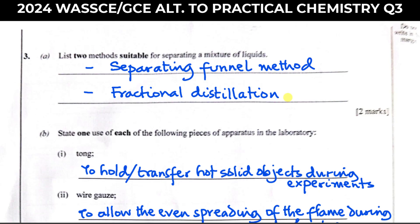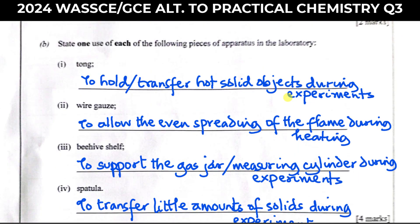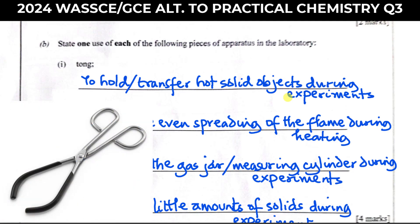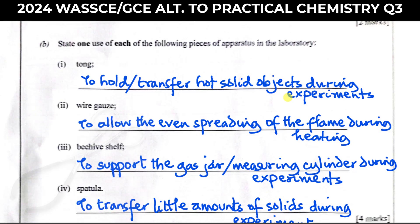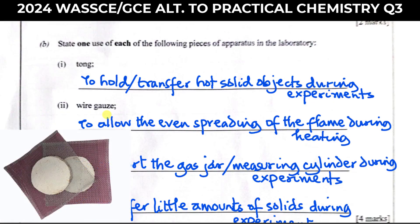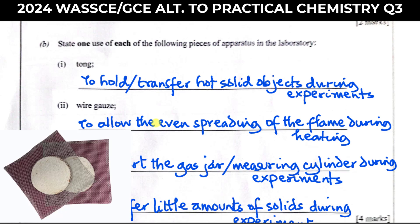The next question says: state one use of the following pieces of apparatus in the laboratory. Tongs are used to hold or transfer hot solid objects during an experiment. For example, if you were heating a crucible and want to bring it down from the tripod stand that was being heated by the Bunsen burner, you don't use your hand — you use tongs. The wire gauze is to allow the even spreading of the flame when heating; for example, when heating an evaporating dish during evaporation, you use the wire gauze to spread the flame all around the bottom of the dish.